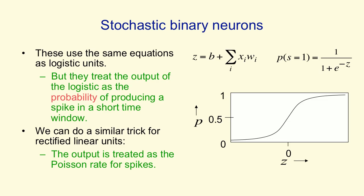It's a Poisson process. So the rectified linear unit determines the rate, but intrinsic randomness in the unit determines when the spikes are actually produced.